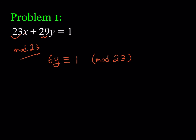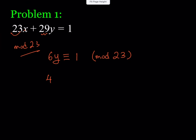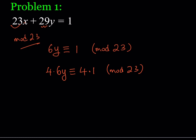I'm going to multiply both sides by 4. In a congruence statement, you can always multiply both sides by any number you wish. Division is tricky — you can't always do it — but multiplication, addition, and subtraction are always fine. You can also raise both sides to the same power.